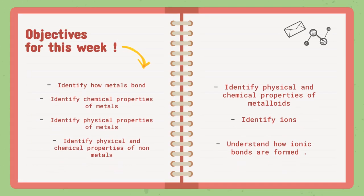As for the objectives for this week, for the first lesson — which is bonding and the periodic table — we are going to identify how metals bond. We started last week with what valence electrons are and how we interpret them from the periodic table. So we're going to start with the metals group and see how valence electrons affect the way they bond.